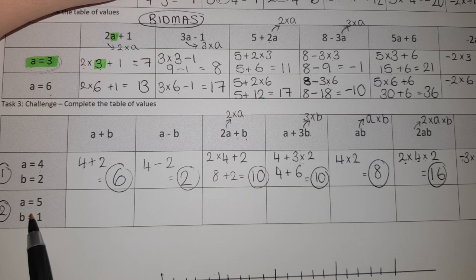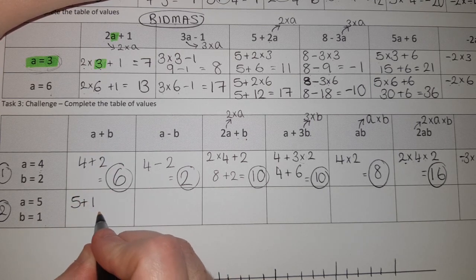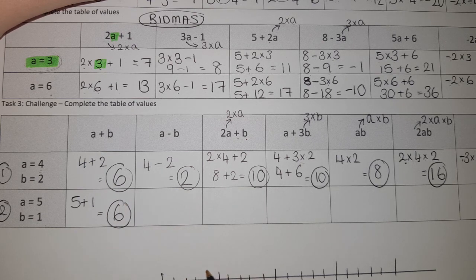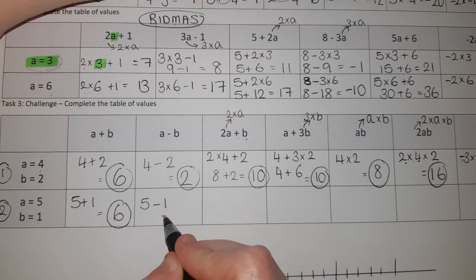So going through the answers - A is five and B is one this time. So five add one, we get six again. Next one, you've got A is five, B is one, but it's a subtract this time. Five take away one is four. Hopefully the first two are actually not too bad.